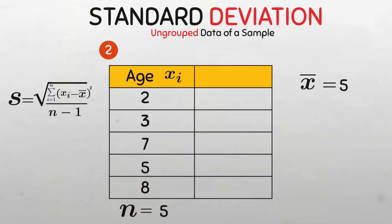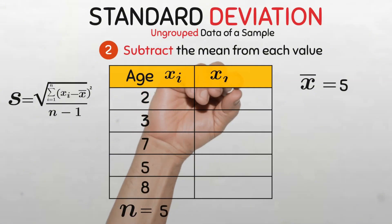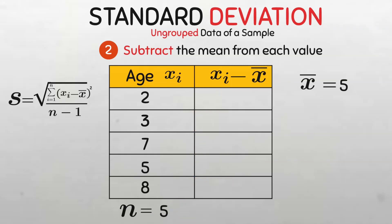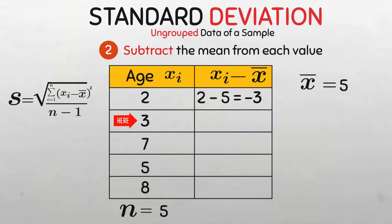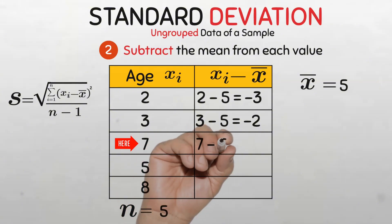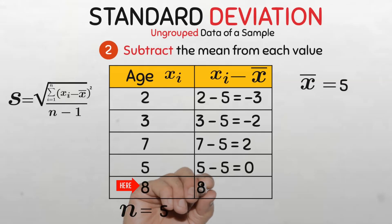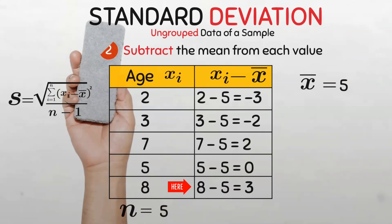Now let us go to step two, which is to subtract the mean from each value of X sub i. This gives us the distance between each value and the mean — the deviations from the mean — which is the part of the formula in parentheses. We add a second column labelled X sub i minus X bar. For the first value: 2 minus 5 equals negative 3. For the second: 3 minus 5 equals negative 2. For the third: 7 minus 5 equals 2. The fourth: 5 minus 5 equals 0. And lastly: 8 minus 5 equals 3. Now we have all the deviations from the mean.